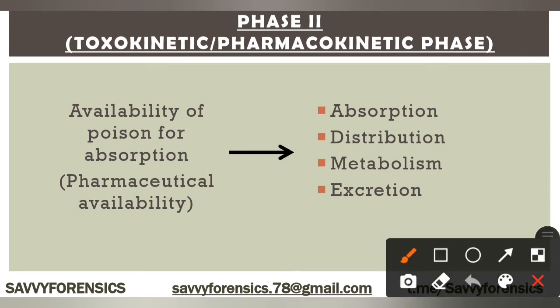Next we move to the second phase — we call it the toxokinetic or pharmacokinetic phase. Toxokinetic means toxins or poisons; kinetic means motion and movement. Similarly, pharmacokinetic — pharma refers to poisons or chemicals — and kinetic means motion, which means the availability of poison for absorption. This is right after the solubility phase, meaning the amount of poison that has dissolved becomes active and available.